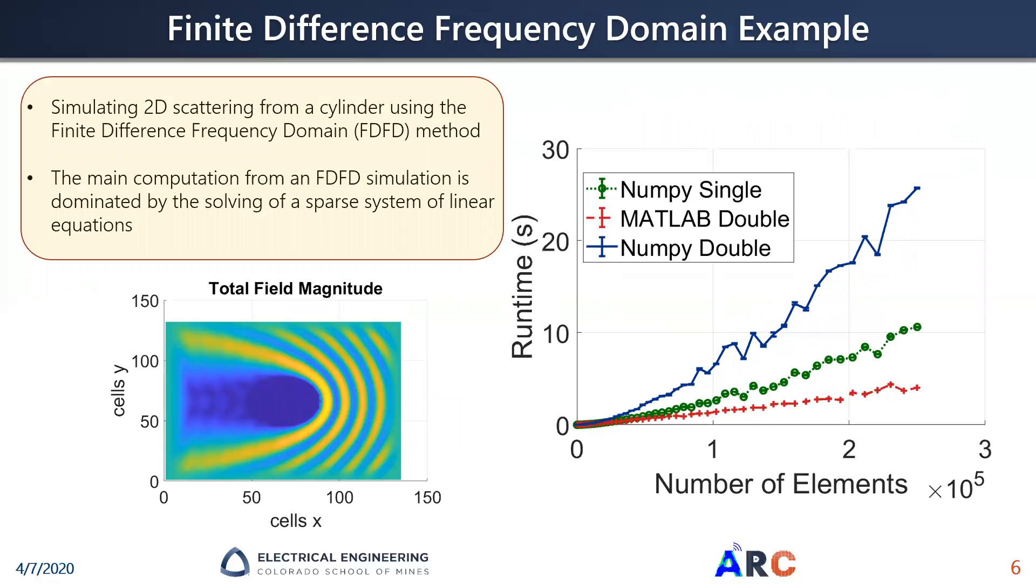Moving on to a realistic example, here we have simulation of a scattering from a cylinder using a finite difference frequency domain method. The main computation in this problem is the solving of a sparse system of linear equations, and therefore, we'd expect MATLAB to outperform, which you can see on the right, for a variety of discretization sizes, MATLAB always outperforms Python for both single and double precision.